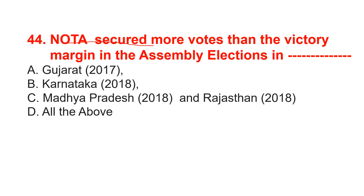NOTA secured more votes than the victory margin in assembly elections in Gujarat, Karnataka, Madhya Pradesh, and Rajasthan. So the correct option is all of the above — option D.